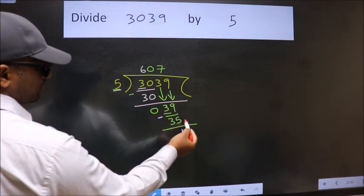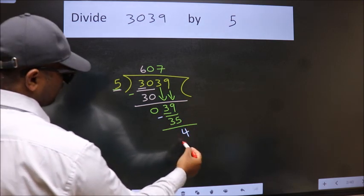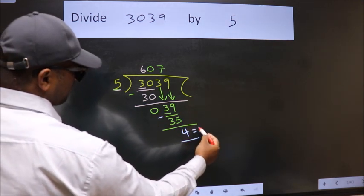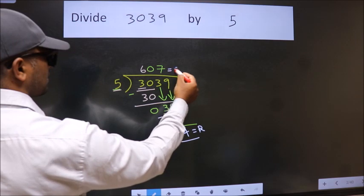No more numbers to bring down. So, we stop here. This is our remainder. This is our quotient.